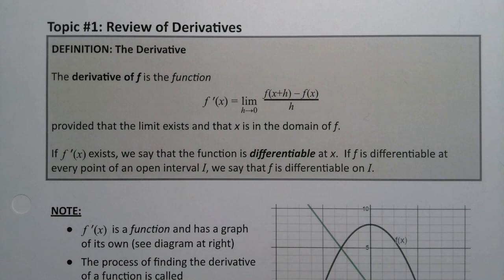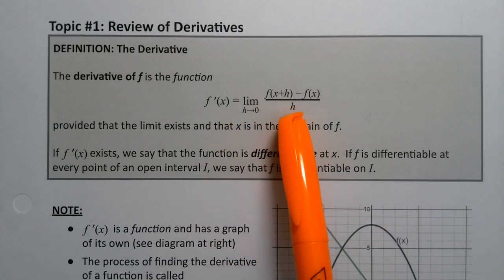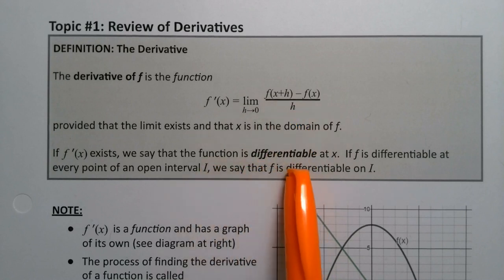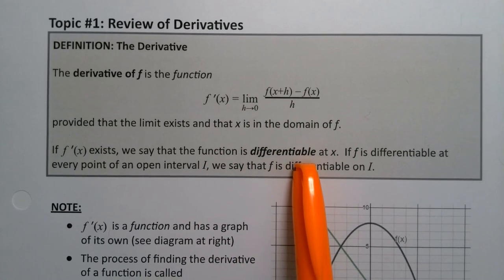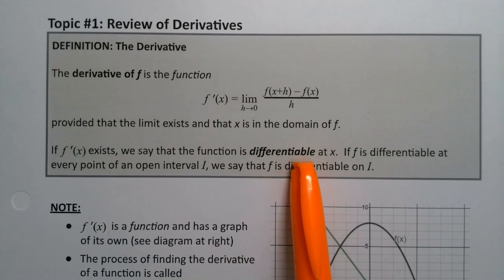Now if you can find this derivative, if this limit exists, then we say that the function is differentiable. Differentiable is the fancy way of saying can take the derivative of it. Different because difference is in the difference quotient.